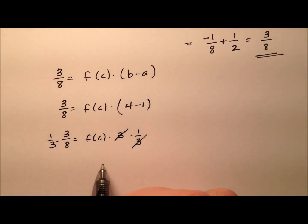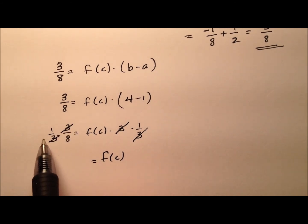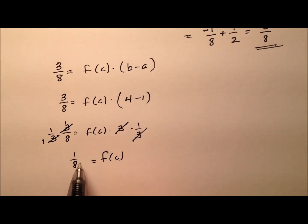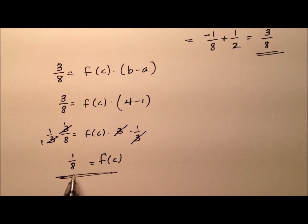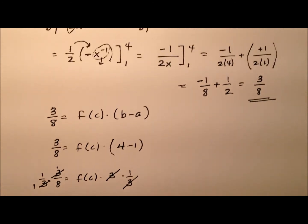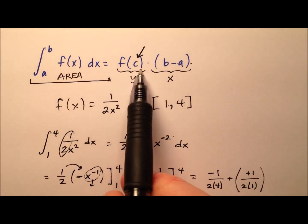So I can multiply both sides of this equation by one third. So the three and the one third cancel, leaving just the f of c. You'll notice also these threes cancel, so it leaves me with one eighth. So what I'm saying here, the average value of the function is one eighth, and that's this f of c right here.